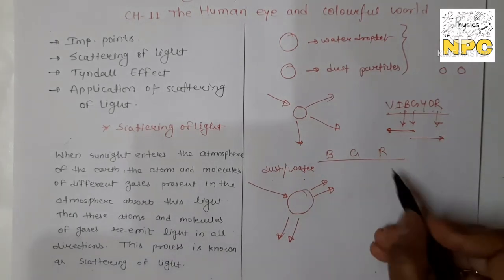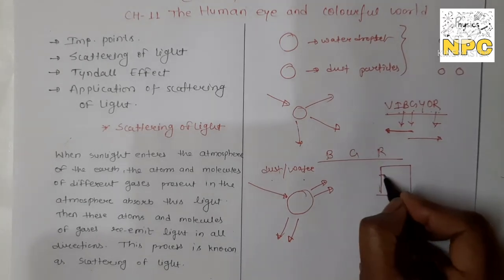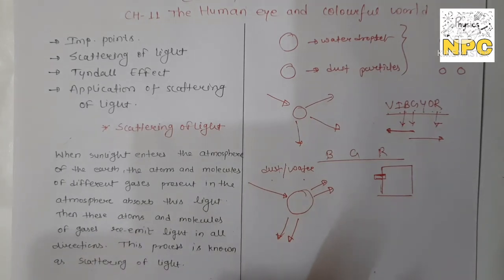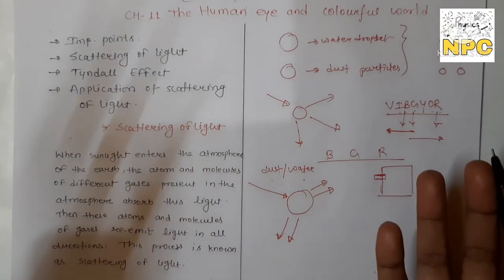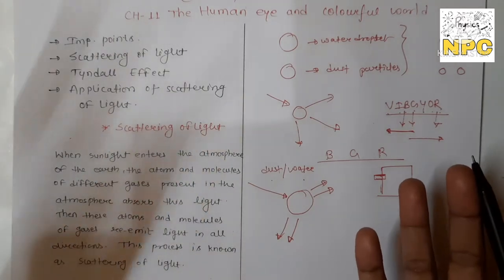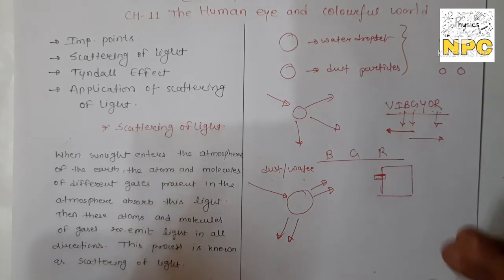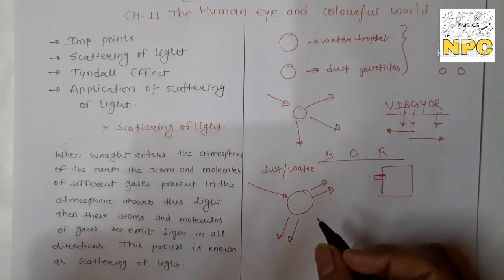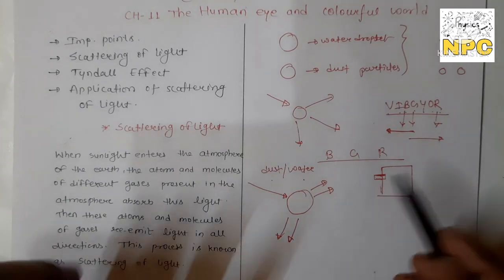For example, if you take a room filled with dust particles and make a small hole in it, you can easily see the path of light. This is because dust particles are quite large, so after scattering, these particles become visible. The effect in which the path of light becomes visible is called the Tyndall Effect. The Tyndall Effect is basically due to the scattering of light.